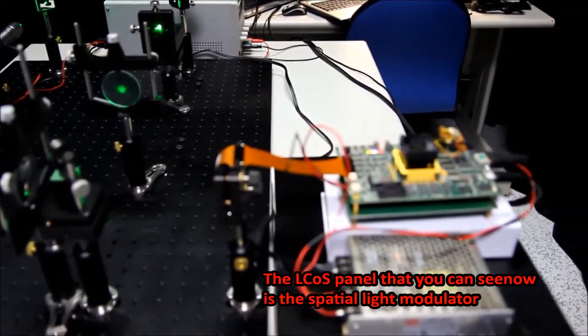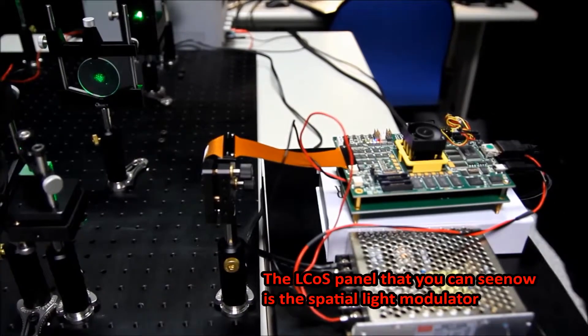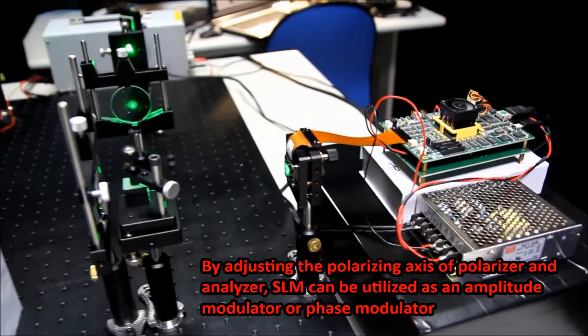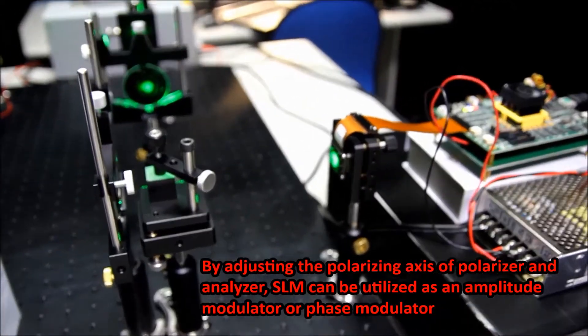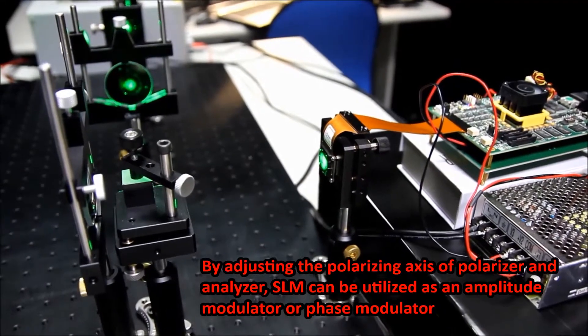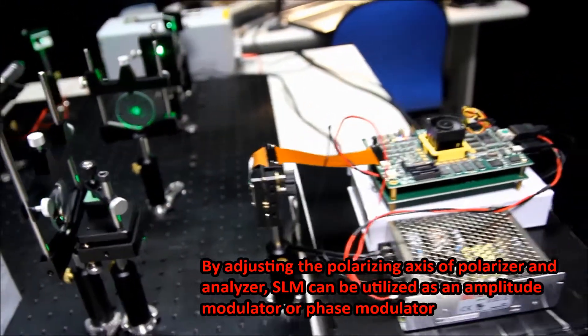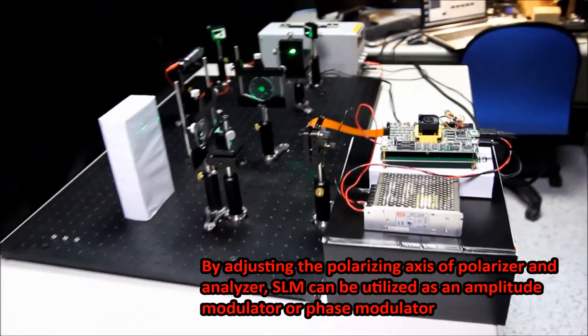The liquid crystal panel that you can see now is the spatial light modulator. By adjusting the polarizing axis of polarizer and analyzer, SLM can be utilized as an amplitude modulator or phase modulator.